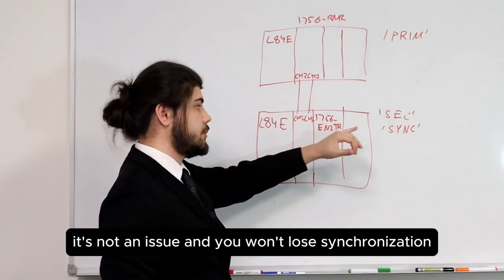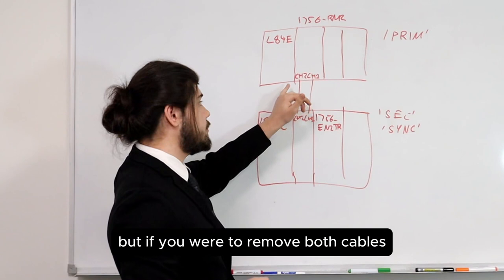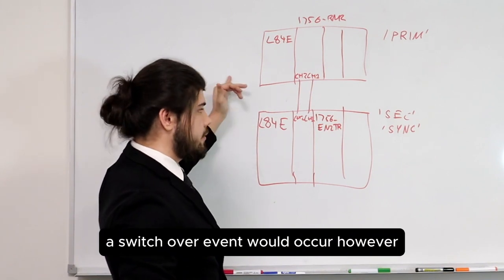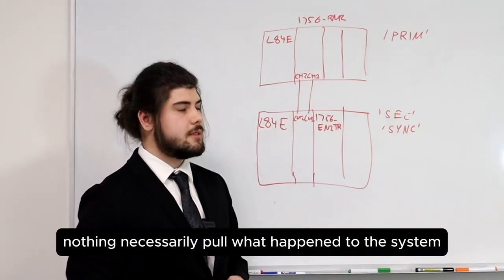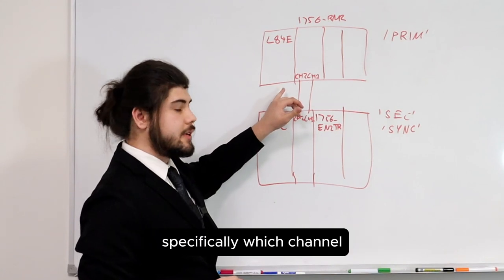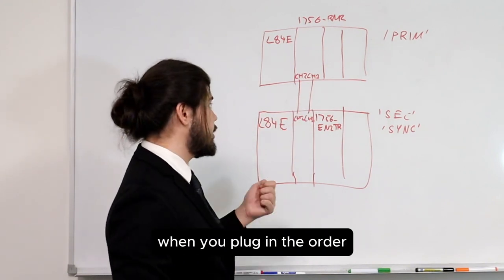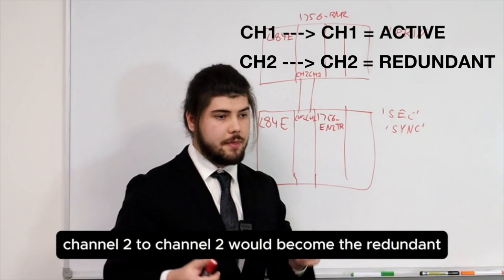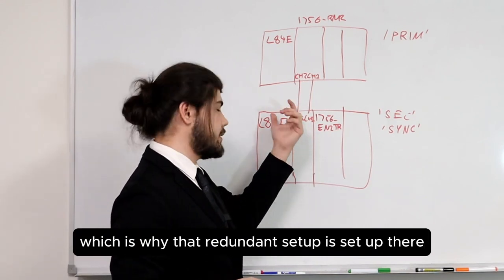If you unplug one fiber optic cable, it's not an issue and you won't lose synchronization, because the other cable will become the active — it performs its own little switchover for the cables without doing it for the PLCs. If you remove both cables, a switchover would not occur because the system identifies the cable as the fault and not the PLC. No switchover event would occur, but the secondary that was synchronized would no longer be able to cross-load and would become disqualified. In software, there is no way to designate which channel or cable is active for cross-loading versus standby — that's entirely based on which order you plug them in. There is no way to remotely switch which channel is active, but the system will automatically handle it if there is a fault in the cable.